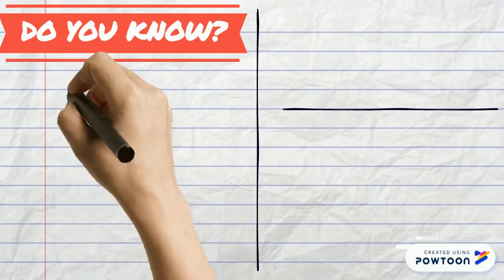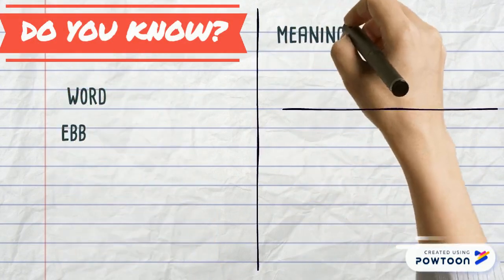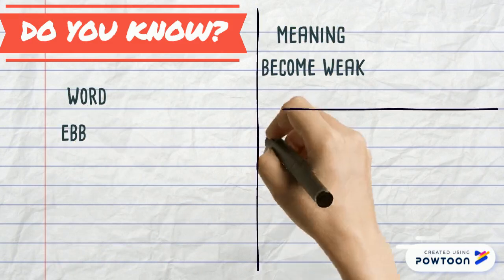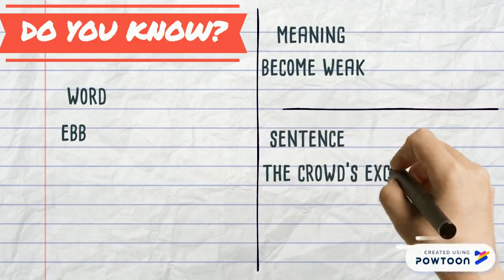The fourth word is ebb. Its meaning is become weak. Sentence from it is the crowd's excitement began to ebb.